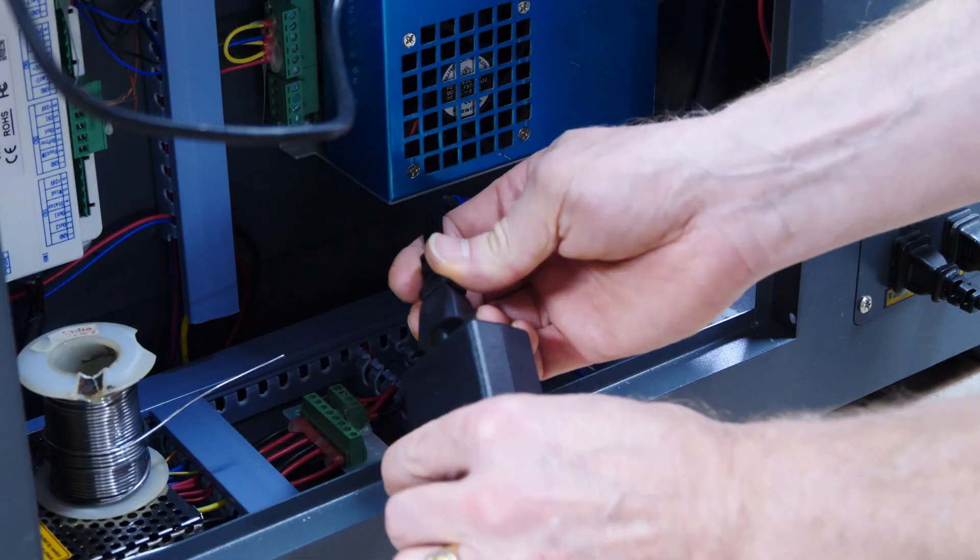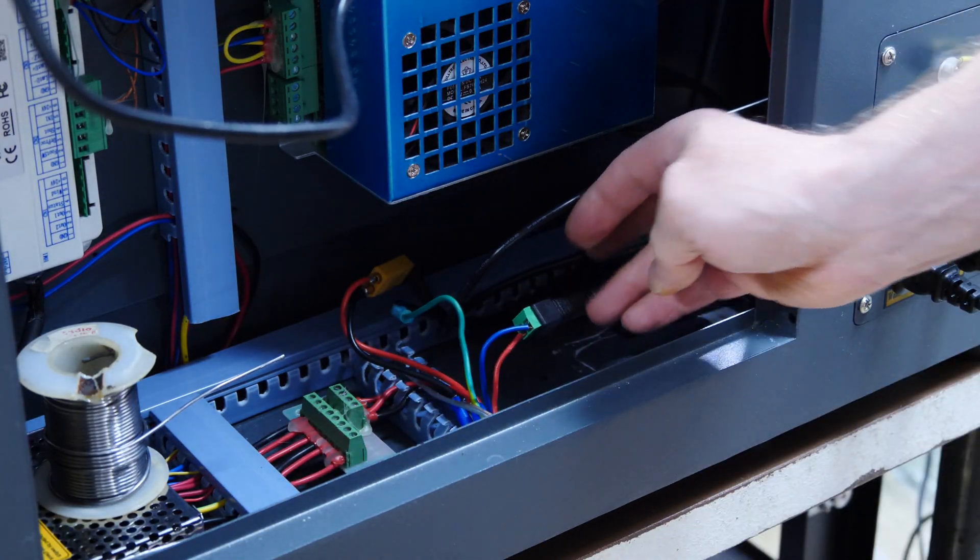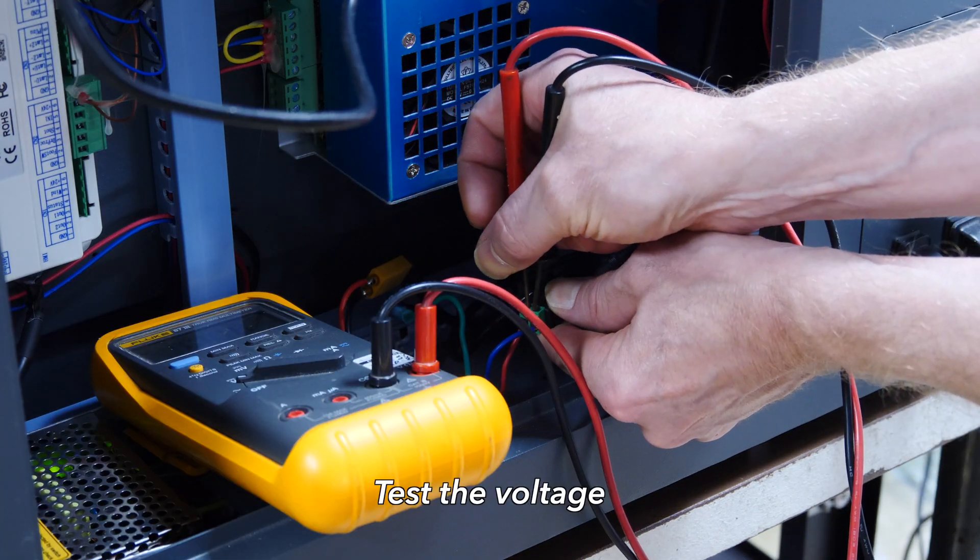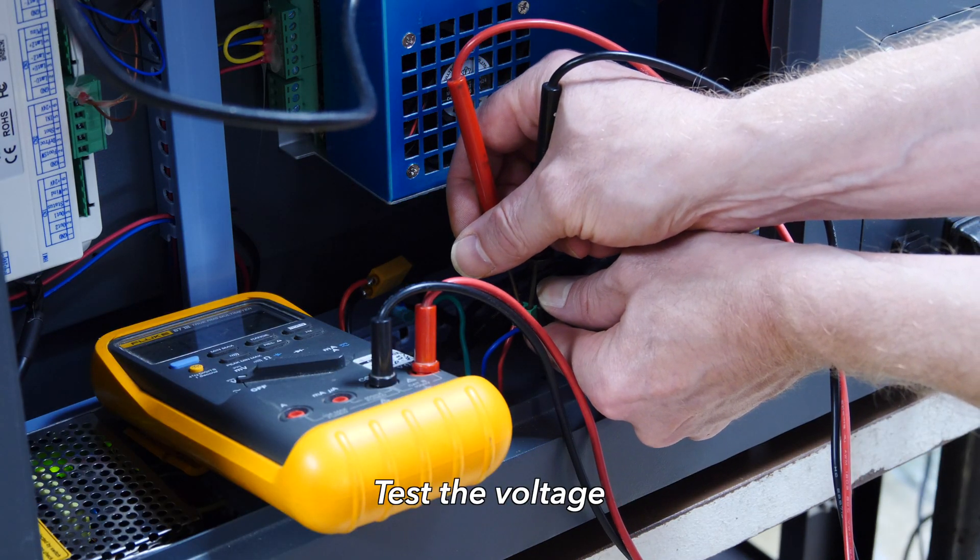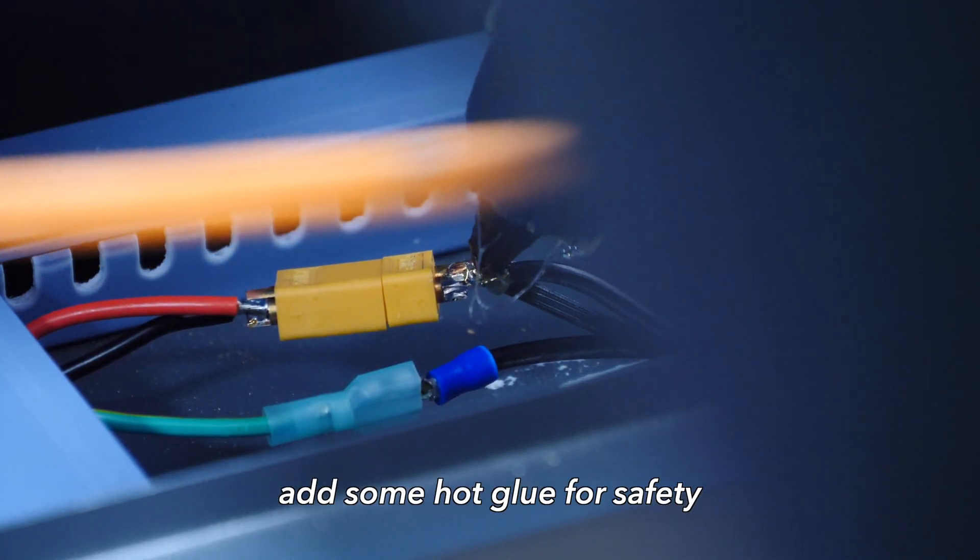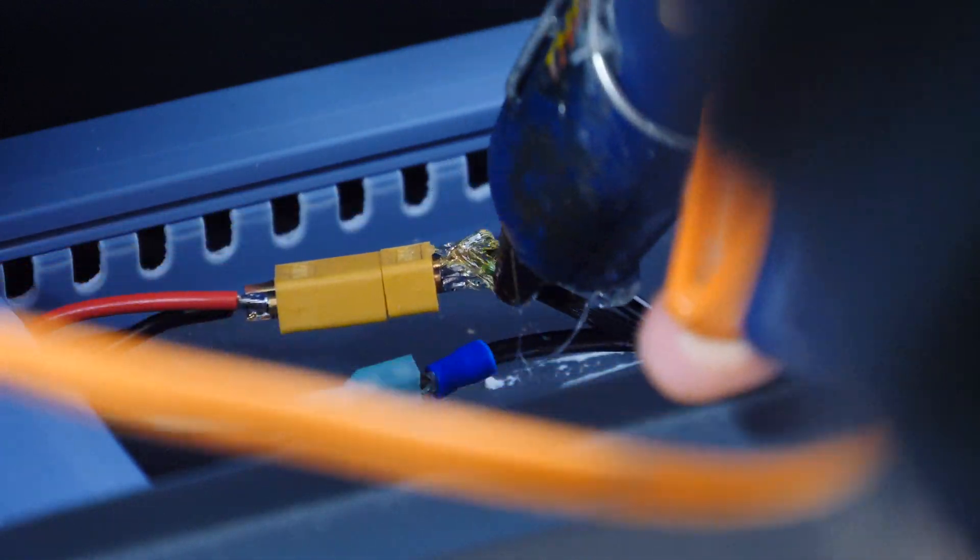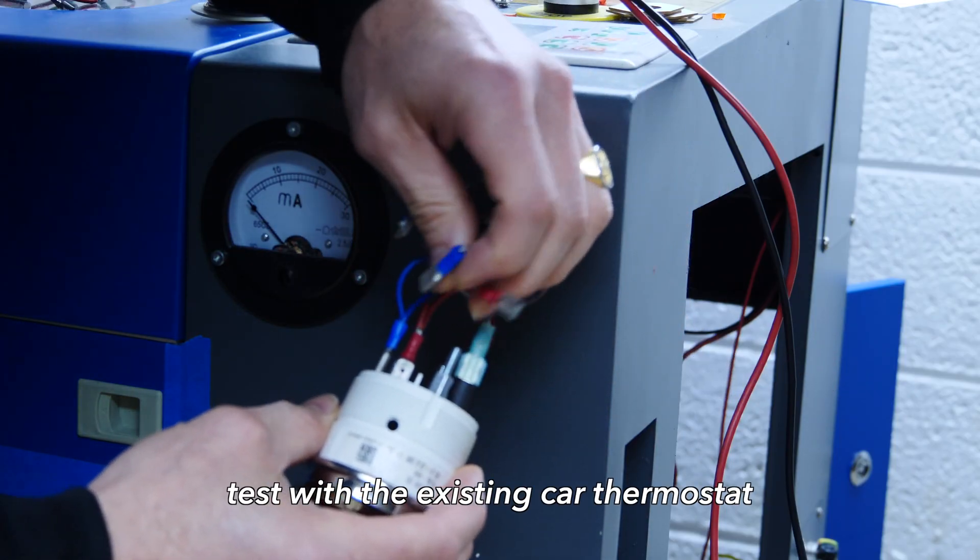All right, now we can just plug in the power supply, all quick disconnect. Let's test the voltage to make sure we get 12 volts and that's what we have. We can move on. I'm going to add a little hot glue here just to make sure that we don't have any short circuits in the future.